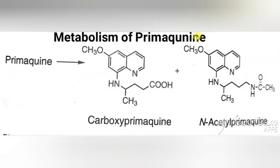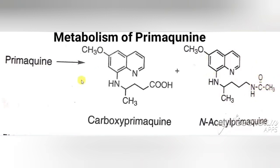Regarding the metabolism of primaquine: it is metabolized to give the major metabolite carboxyprimaquine — where a COOH group replaces the side chain — and the minor metabolite N-acetylprimaquine, where an acetyl group is added to the NH. Carboxyprimaquine is the major metabolite and N-acetylprimaquine is the minor one.